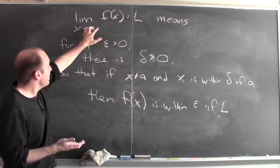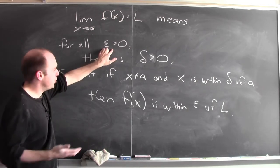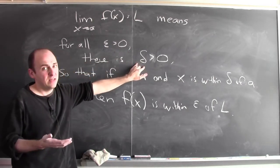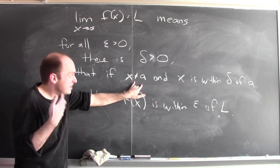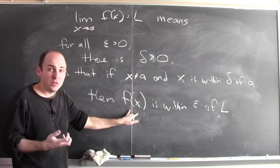And to say that the limit of f(x) equals L means that no matter which epsilon I choose, there's some corresponding delta, so that whenever x is within delta of a, then f(x) is within epsilon of L.